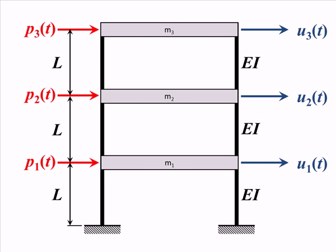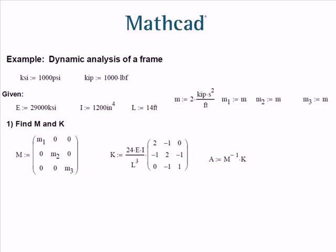Recall that the shear building looks like this that we worked on before. Now here is a screen capture of the solution to this problem in Mathcad. Mathcad is nice because it uses units quite naturally. You can even define units, as I've done here. Next I've entered the parameters for the building. And lastly, I have defined the mass and stiffness matrix based on what we saw before, which allows me to calculate the matrix A.